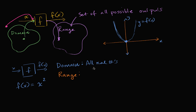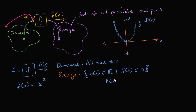So what is the set of all possible outputs? In this case, the set of all possible outputs is the set of all possible y values. We see y can take on any non-negative value — y could be zero, one, pi, or e — but y cannot be negative. So the range is: f of x is a member of the real numbers such that f of x is greater than or equal to zero. The set of all non-negative numbers is our range.